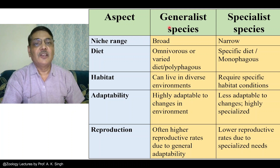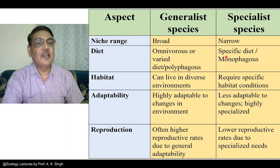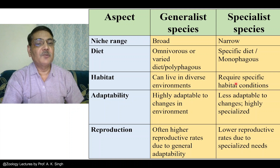Generalist species are typically omnivorous. Herbivorous generalists feed on a variety of plant materials, and if carnivorous, they feed on a variety of animals — including invertebrates and vertebrates. So they are polyphagous. Specialist species, on the other hand, feed on a specific kind of diet, so they are monophagous. Regarding habitat, generalist species can live in diverse environmental conditions, while specialists require specific habitat conditions.